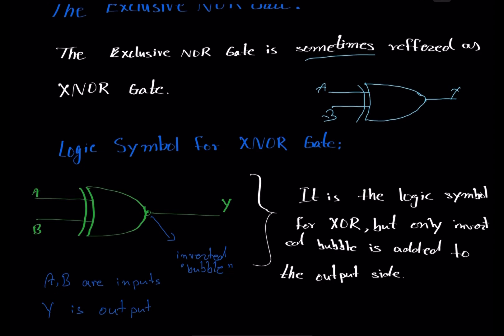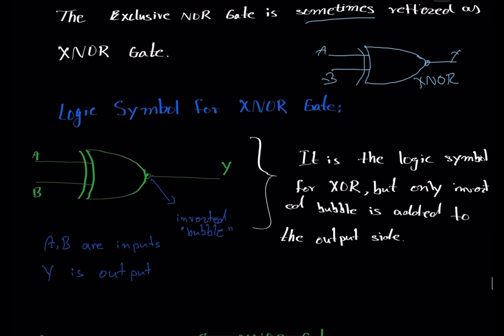The XOR gate logic symbol was this one. Since XNOR gate means exclusive NOT OR gate, if you want to make it inverted — to NOT — you just have to add an inverting bubble right here at the output. Without this bubble that would be the XOR gate, and with the bubble that makes it the XNOR gate.